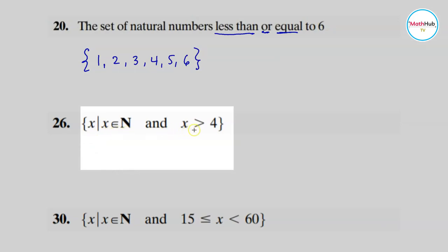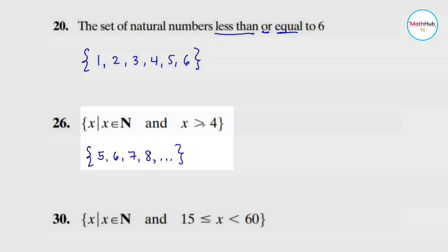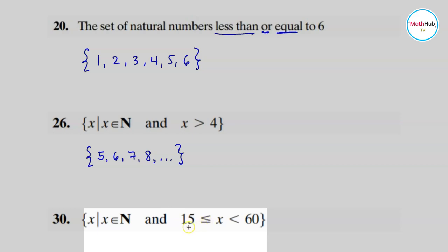Here is the set of natural numbers greater than four. Take note there's no equality sign here, so four is not included. We start with five, six, seven, eight, and so on — it does not have any end. Next, the set of natural numbers where x is greater than or equal to 15 and less than 60. We start at 15 because of the equality sign, listing 15, 16, 17, and so on, ending at 59 since 60 is not included.